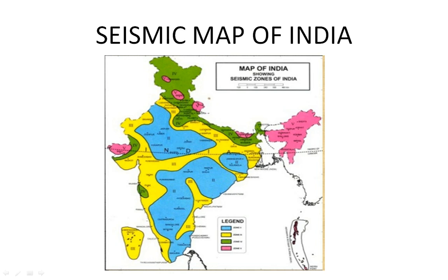The next slide shows the seismic map of India. India has been divided into four zones. The blue areas show the cities or areas under zone 2. Yellow areas mark the cities under zone 3. Green areas mark zone 4, and the pink areas mark zone 5. You can see the Bhuj area, which was under zone 2, is now under zone 5.